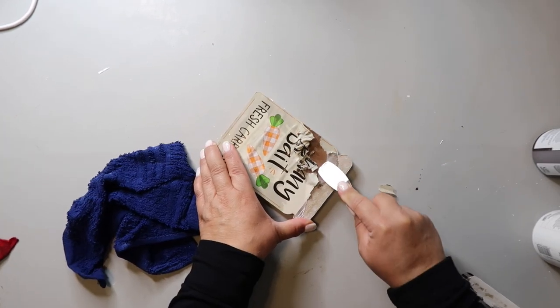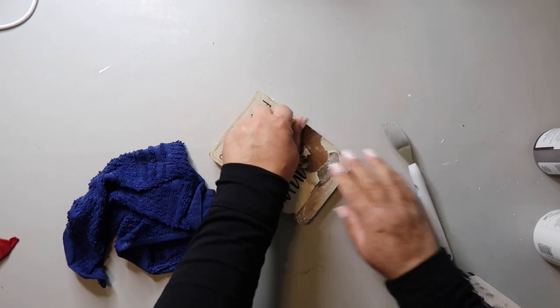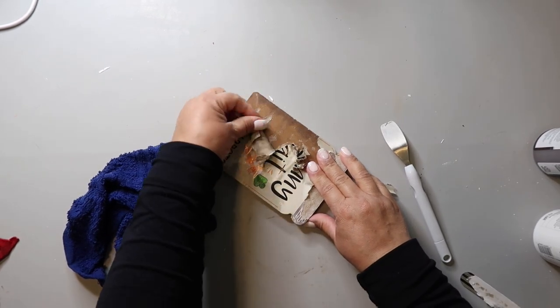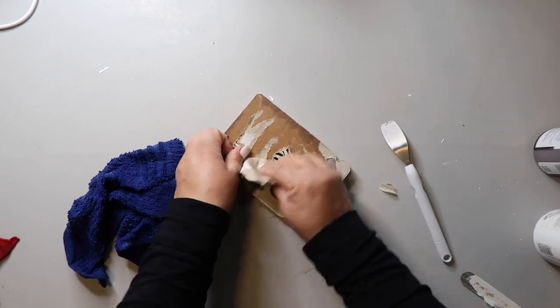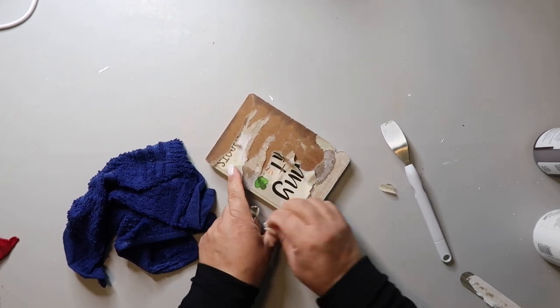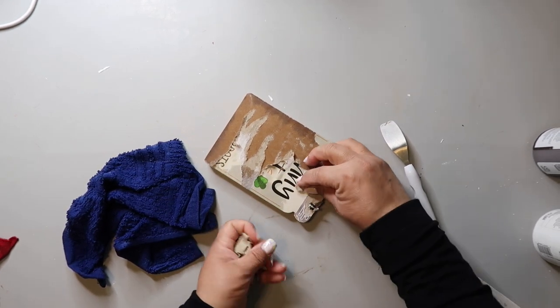After you let that rag soak the paper for a bit, it peels back pretty easily. And then I just scrape it with that scraper tool thing. And sometimes I rub it with the rag. I get all the paper off and I also make sure to remove the gummy glue residue as well.